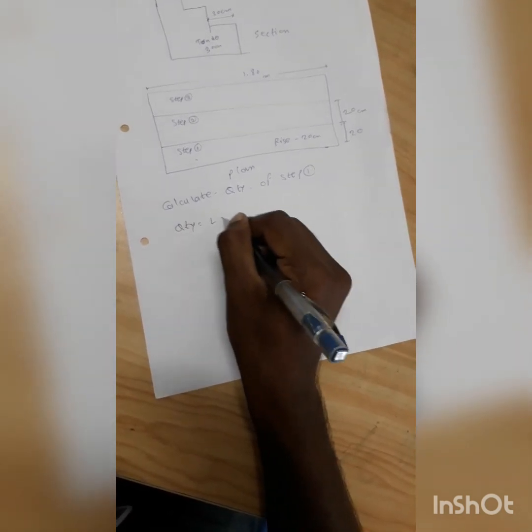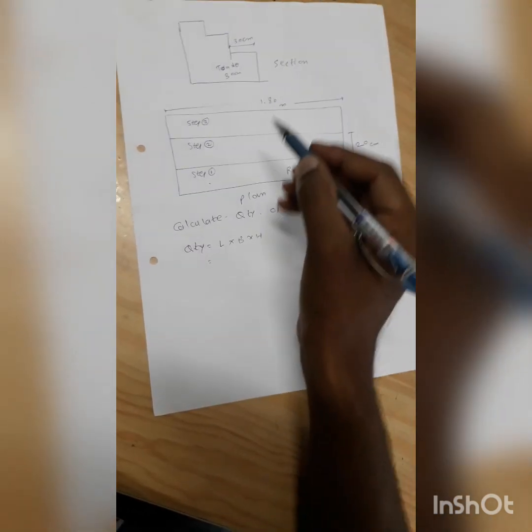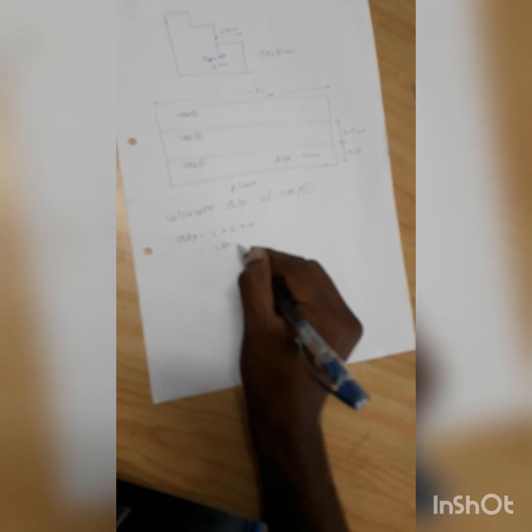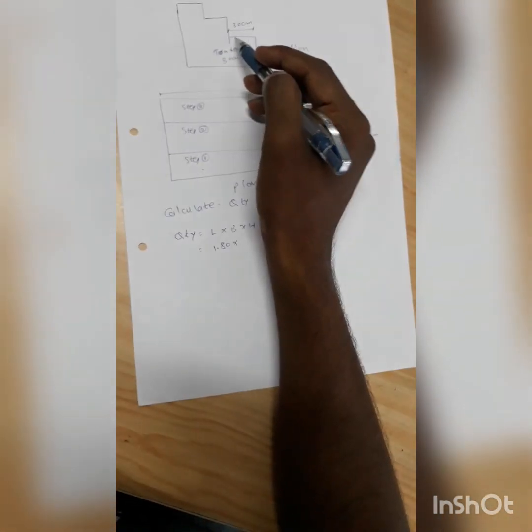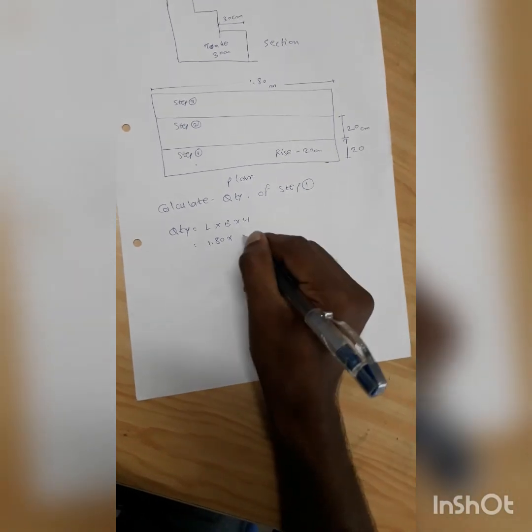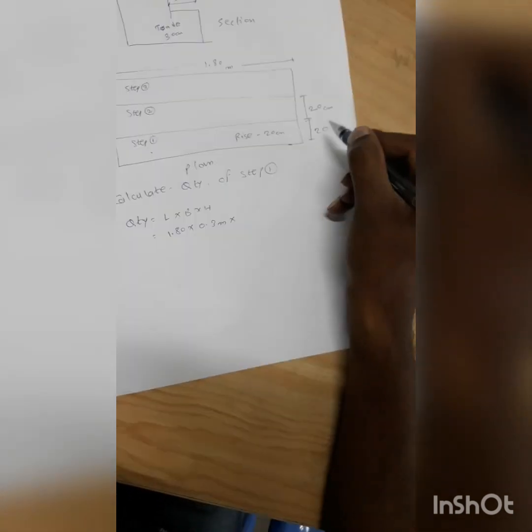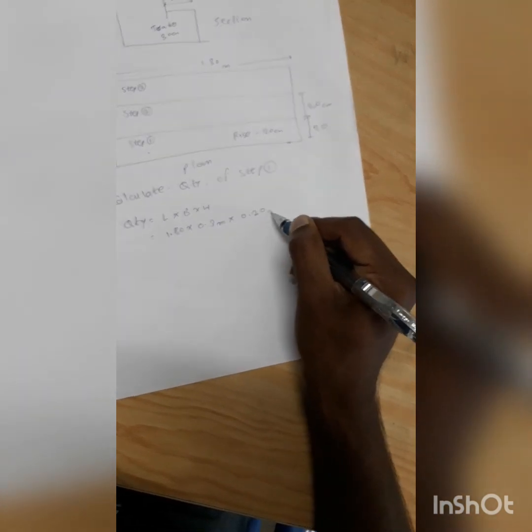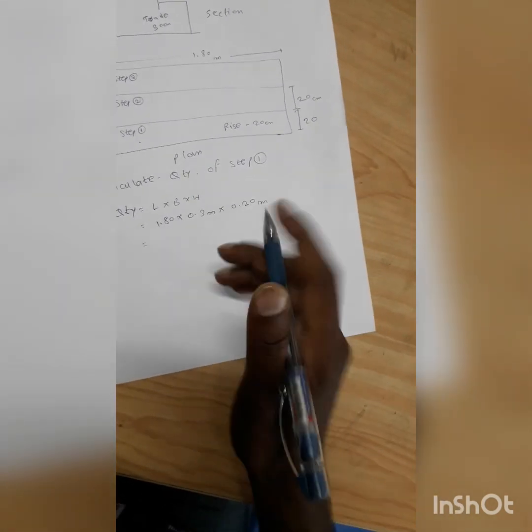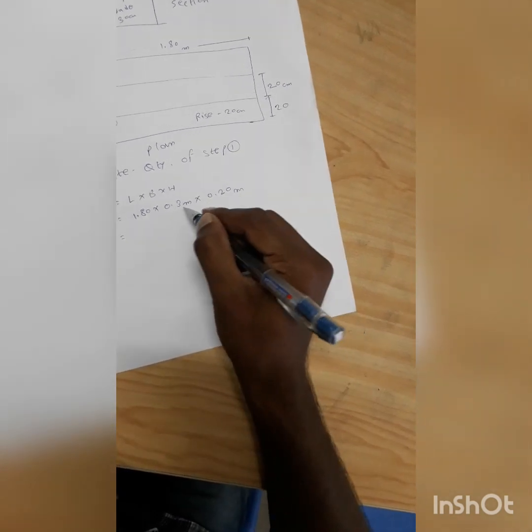The length is 1.8 meters, width of the step is 30 centimeters which is equal to 0.3 meters. Height is equal to rise, which means 20 centimeters is equal to 0.2 meters.